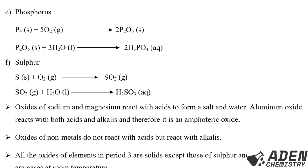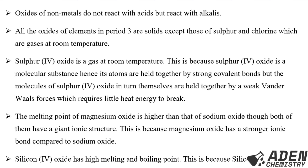Remember, amphoteric oxides are oxides that show both basic and acidic characteristics - they react with both acids and bases. The oxides of non-metals such as sulfur dioxide and phosphorus 5 oxide do not react with acids but they react with alkalis, forming salt and water as the only products. All the oxides of elements in Period 3 are solids except those of sulfur and chlorine, which are gases at room temperature.